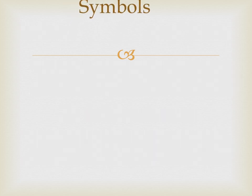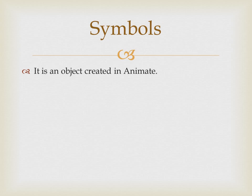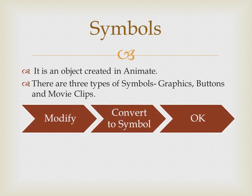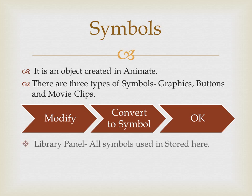The next topic is symbols. A symbol is an object created in animation. Various copies of it can be made and it can be reused. There are basically three types of symbols: graphics, buttons, and movie clips. To create a symbol, first select the object, then click the Modify menu, and then Convert to Symbol. The convert to symbol dialog box appears. Or the user can press the F8 key.